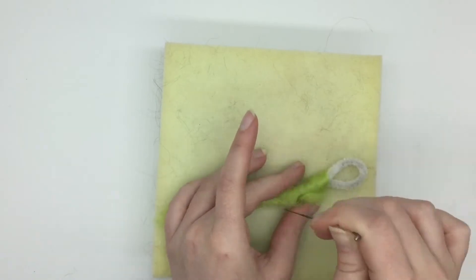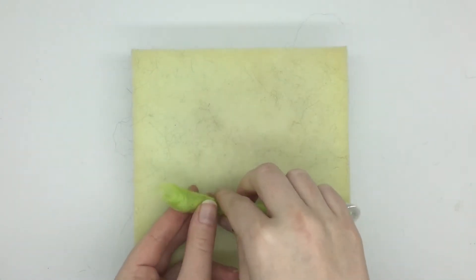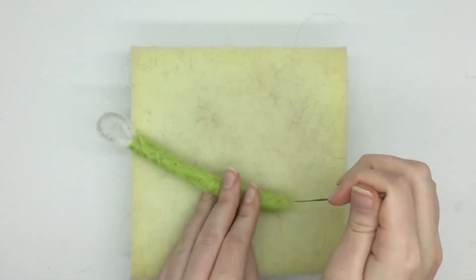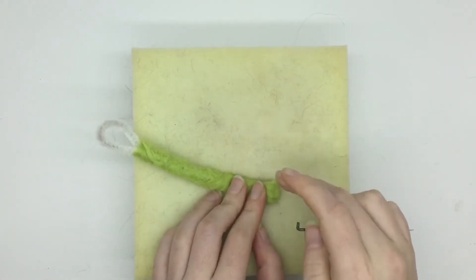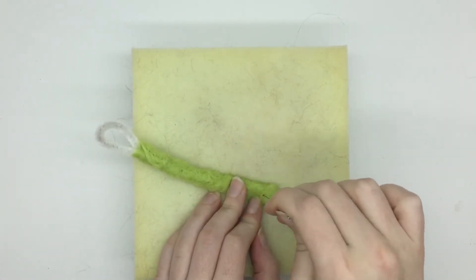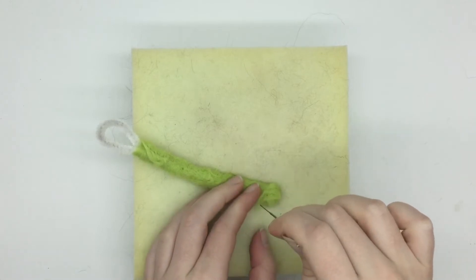Once you've done that, it should look something like this. Now I'm just going to fold over the wool on the end just to make sure that the pipe cleaner's not sticking out the bottom.